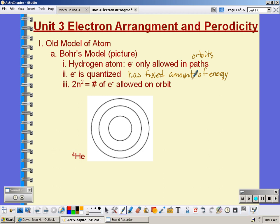Now the little formula 2n squared is not given to you in your reference table, so you will need to remember 2n squared. That tells us the number of electrons allowed on the orbit.